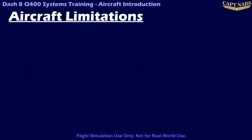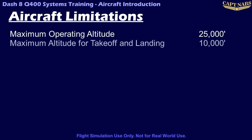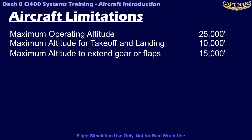Finally, in this module we come to aircraft limitations — key figures that should be committed to memory by pilots. The maximum operating altitude for the Q400 is 25,000 feet. The maximum altitude for takeoff and landing is 10,000 feet. The maximum altitude for extending the gear or flap is 15,000 feet. The maximum runway slope is plus or minus 2 degrees.